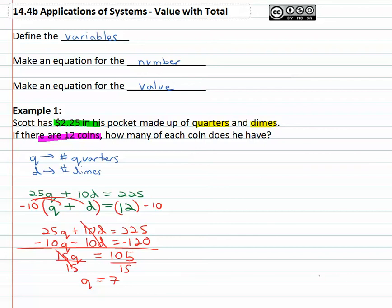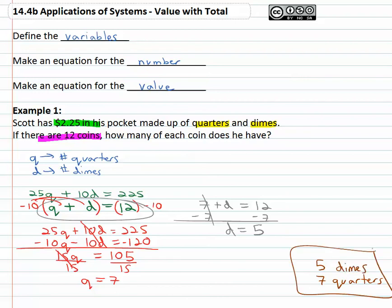We now know there are seven quarters. I'll put my solution over here in the corner. Because we still need to know the number of dimes and how we're going to get that is we need to go back because we used elimination to one of our original equations. And it doesn't matter which, the second equation looks much simpler though, q plus d, seven plus the dimes is equal to twelve. Well we can quickly solve that by subtracting seven from both sides and we find out the number of dimes is equal to five. So we have five dimes and seven quarters for a total of twelve coins of a value of 225.